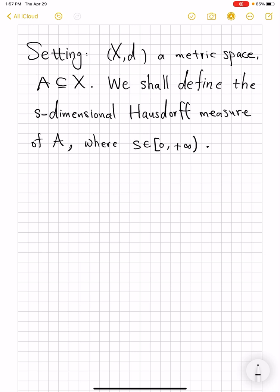XD is a metric space, no restriction. A is a subset of your space, again no restriction. And we want to define the S-dimensional Hausdorff measure, where S is a real number, I emphasize not necessarily an integer, a real number in zero infinity.